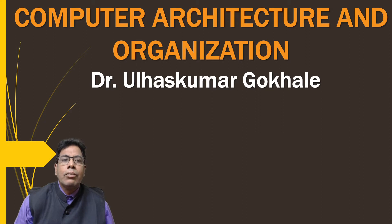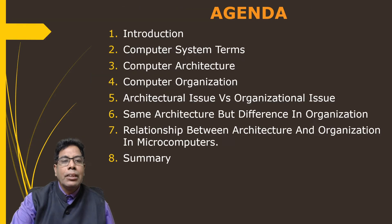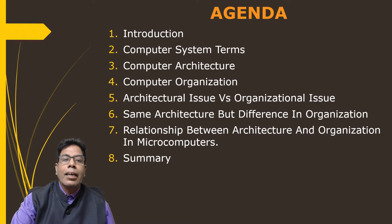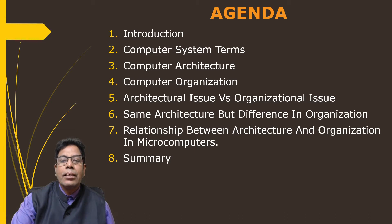In this subject, firstly we have to understand the terms computer architecture and computer organization and the difference between them or the relation between them. Then only it will be possible for us to understand the subject in detail. So we'll begin with the agenda: first is introduction, then computer system terms, then we'll define computer architecture and computer organization. After that, we'll study the architectural issues and the organizational issues, then some computer systems with the same architecture but difference in organization, then the relationship between architecture and organization in microcomputers, and lastly we'll summarize.